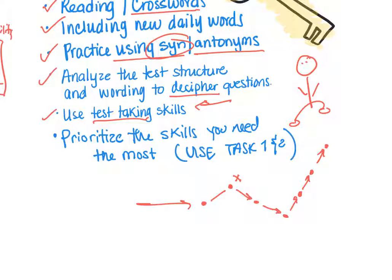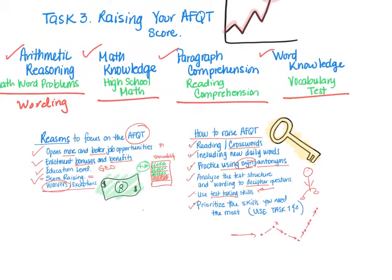Lastly, prioritize the skills you need the most. Use Tasks One and Two to break that down and make a study plan. Out of these four sections, figure out which one needs the most work — maybe it's Math Knowledge because you don't remember geometric formulas, or maybe it's Word Knowledge because English is your second language. Figure out which area to focus on most and prioritize the skills taught in that section. Plan accordingly — let's go!